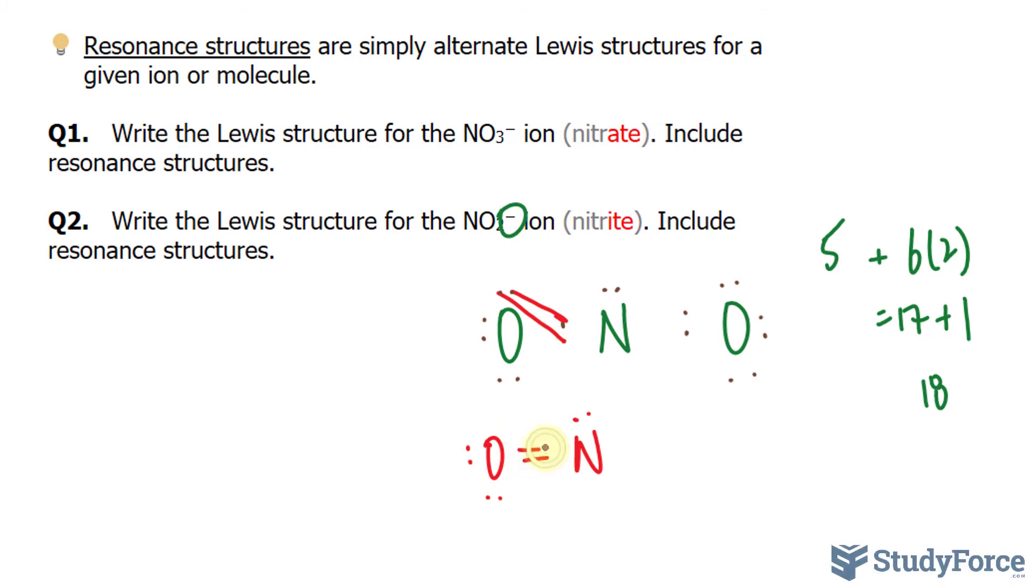Nitrogen, so far, has 1, 2, 3, 4, 5, 6, and we still have a single bond there, so we'll just keep it that way, 7, 8. This oxygen also has 8.